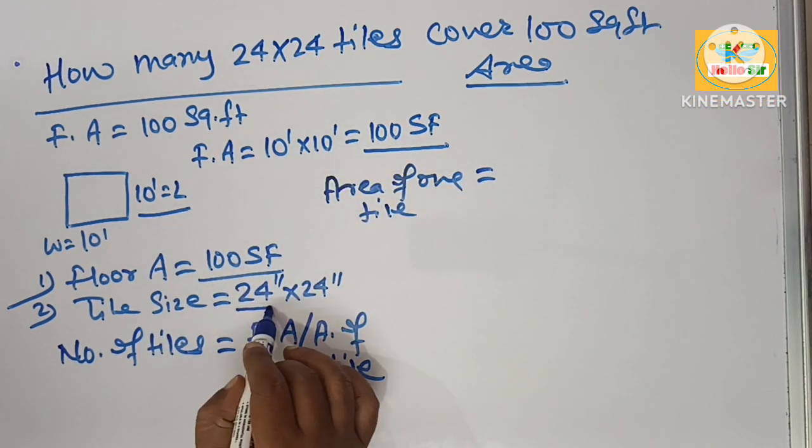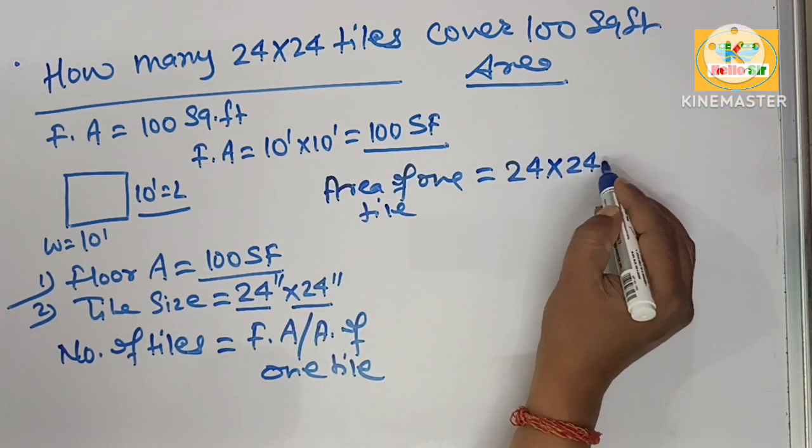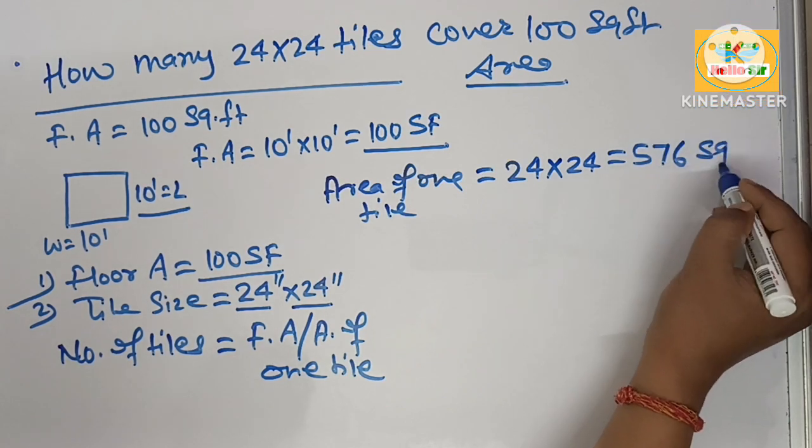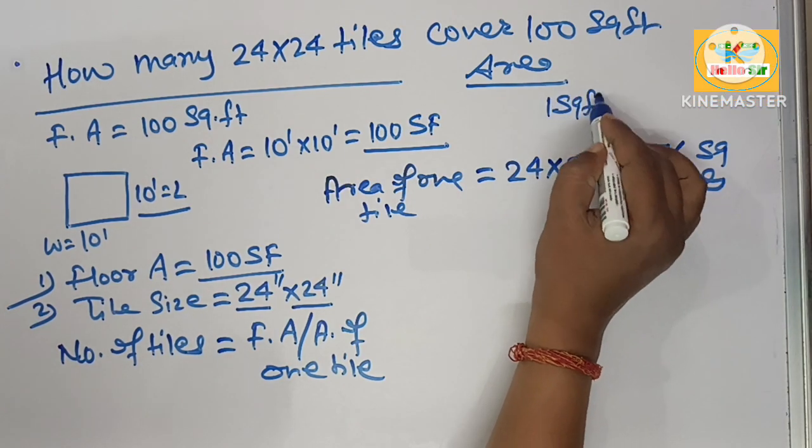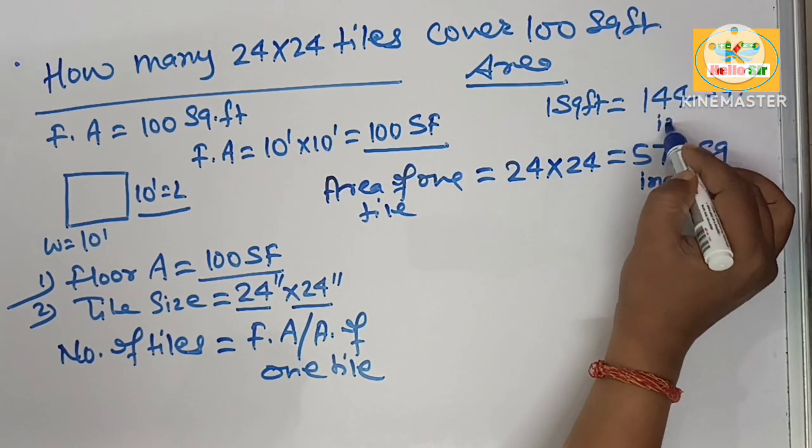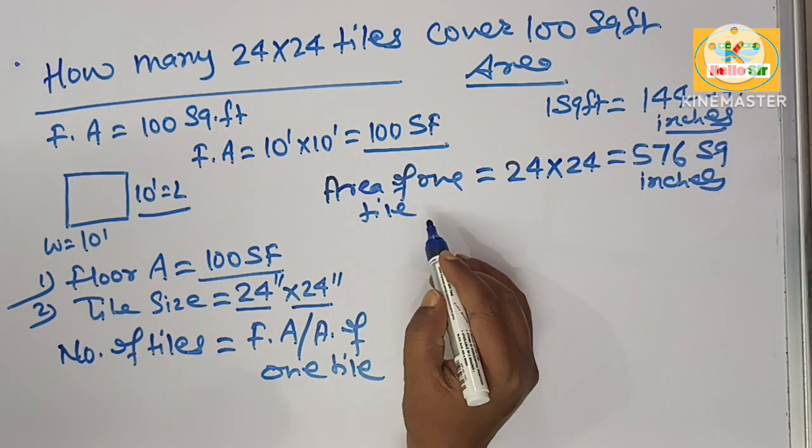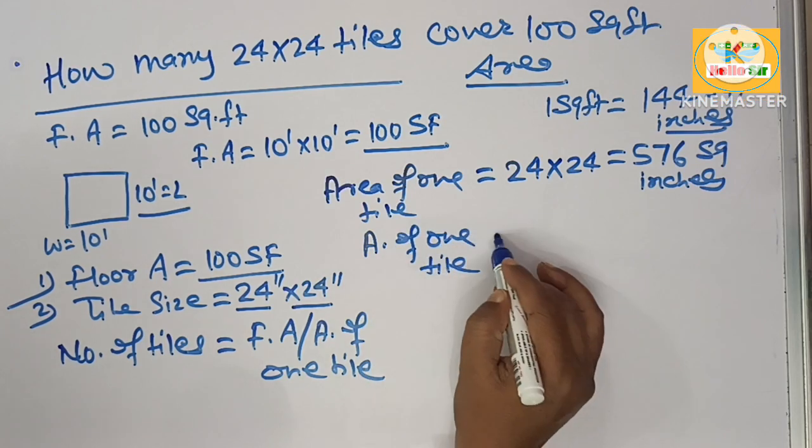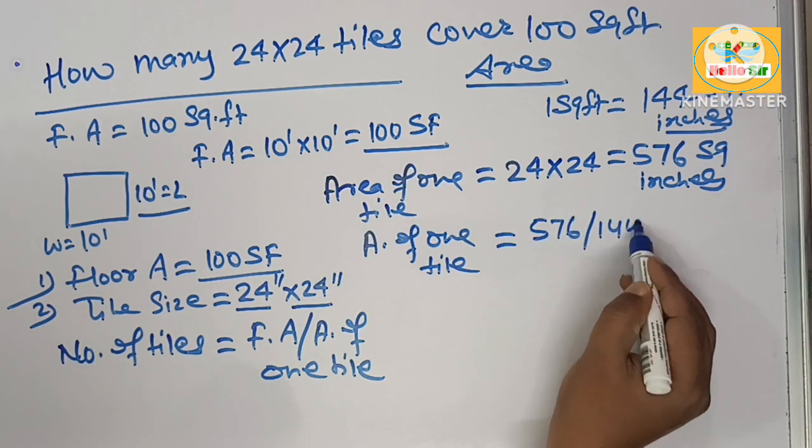Tile has dimension 24 inches by 24 inches. 24 by 24 inches, this will come 576 square inches. You know that one square foot is equal to 144 inches and you have to calculate one tile area in square feet.